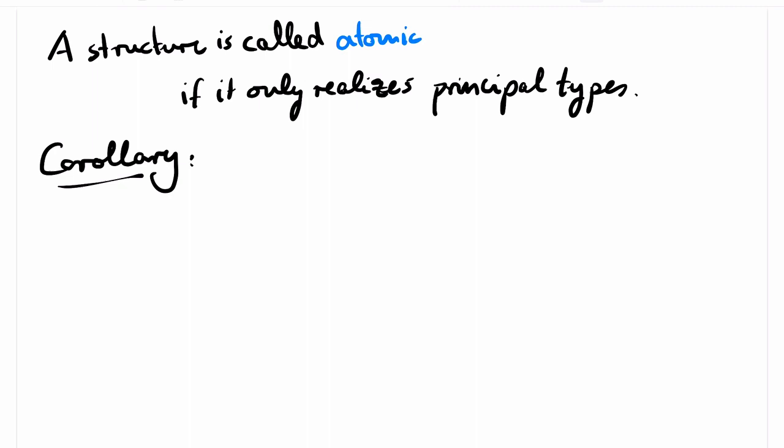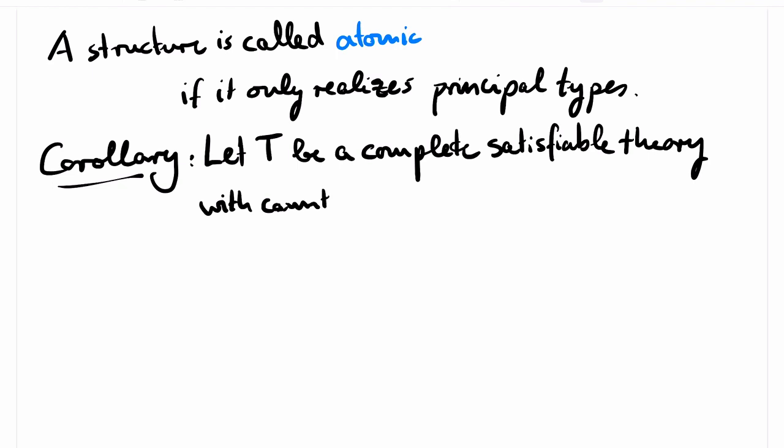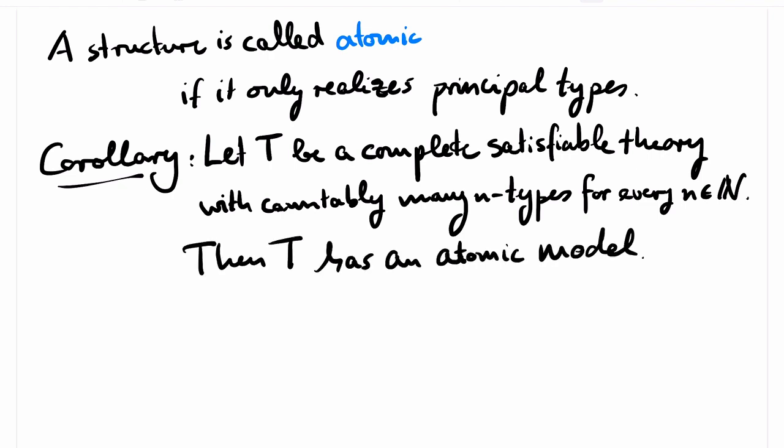The consequence I would like to present is about complete satisfiable theories that have only countably many n-types for every n. Such theories have atomic models. This is clear since we have seen that we can find models that omit countably many non-principal types. So by our countability assumption, we can simply omit all the non-principal types.